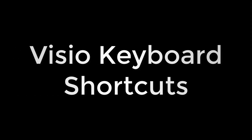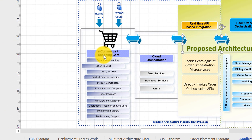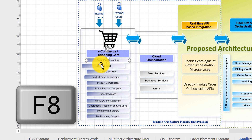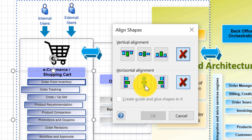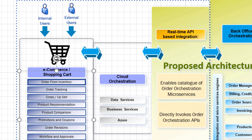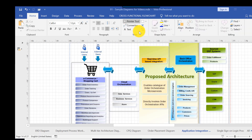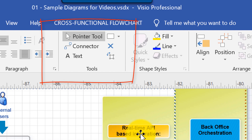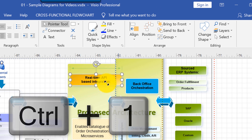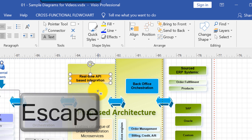Now let's look at Microsoft Visio's most useful keyboard shortcuts. Press F8 to open the Align Shape dialog box to align selected shapes. Ctrl S saves the document. In Visio, you frequently switch between tools: Ctrl 1 selects the Pointer tool (move/resize objects), Ctrl 2 selects the Text tool (edit text), and press Esc to leave text editing. Ctrl 3 switches to the Connector tool to connect objects.